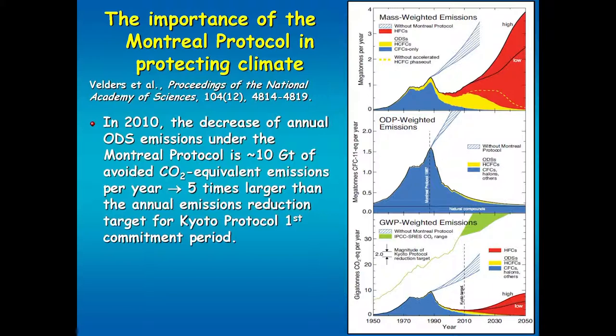When you think about what these emissions mean for ozone depletion, you can weight them by their ozone depleting potential — ODP — which tells you how important a gas is compared to CFC-11. When you move to an ODP-weighted emissions plot, the HCFCs' importance goes away because they're nowhere near as potent as CFC-11 in depleting ozone. The same is true for HFCs — they do not deplete ozone at all because they don't contain any chlorine or bromine. So again you can see the effects of the Montreal Protocol kicking in, and this is what would have happened without it.